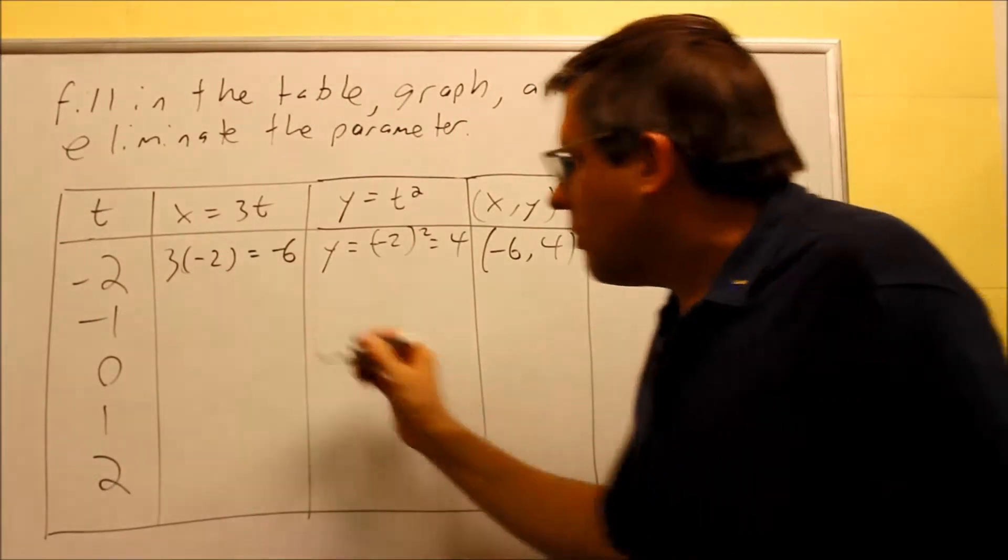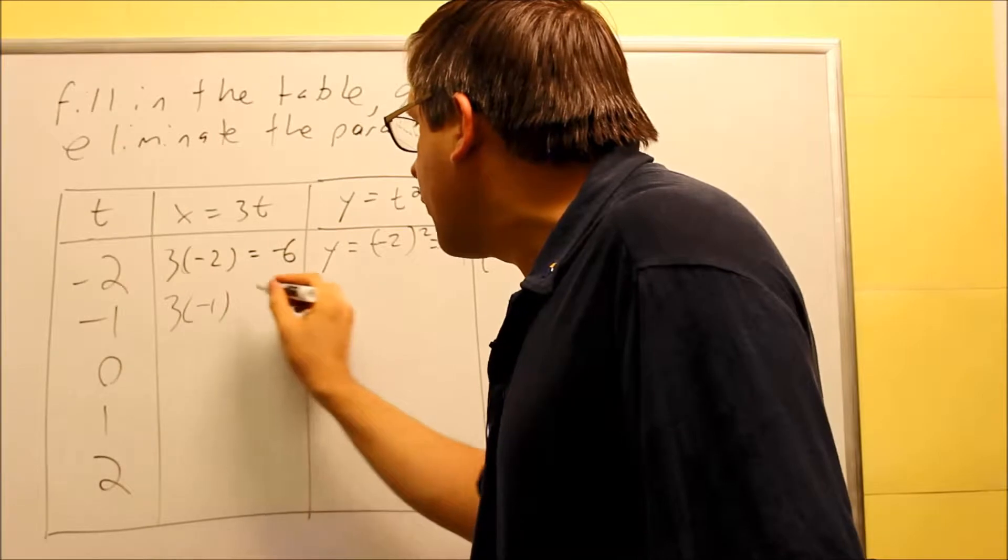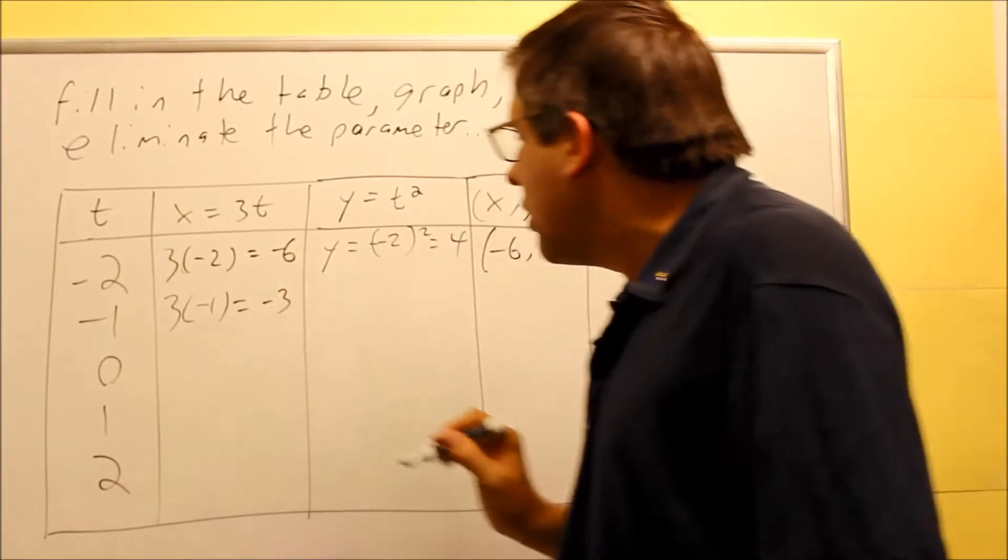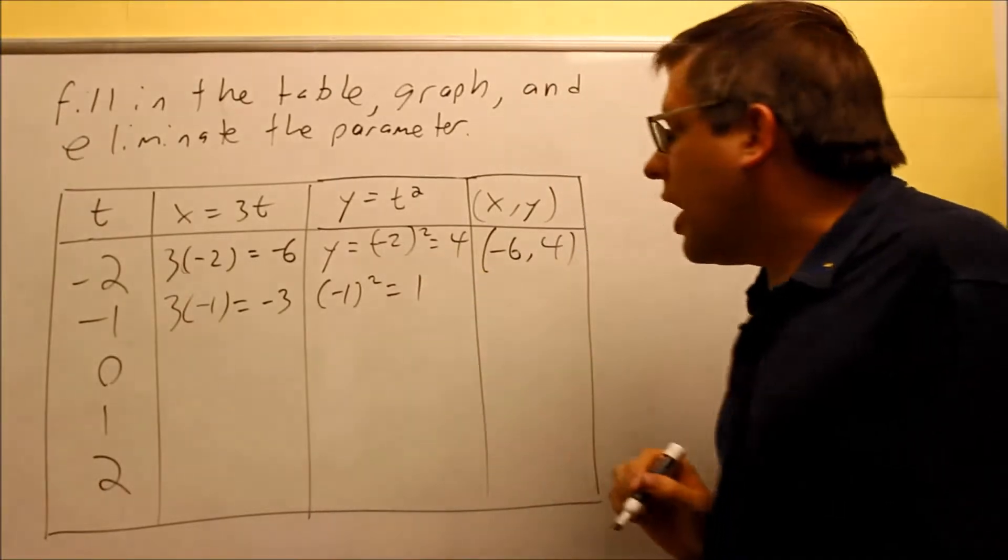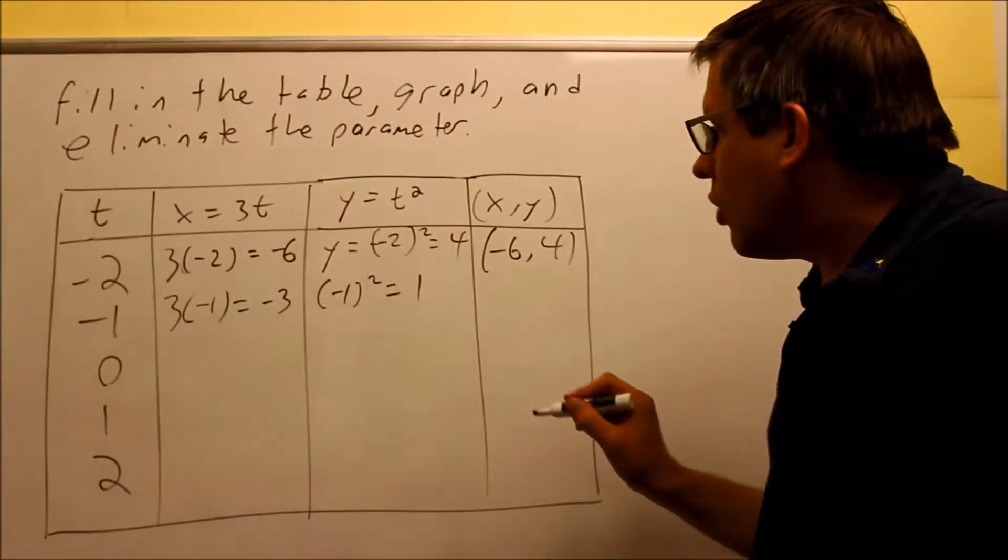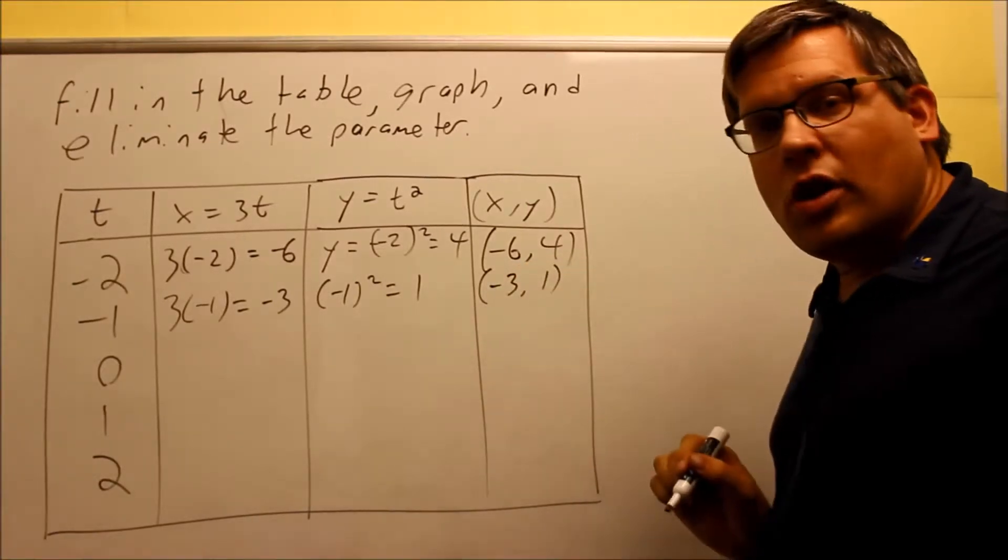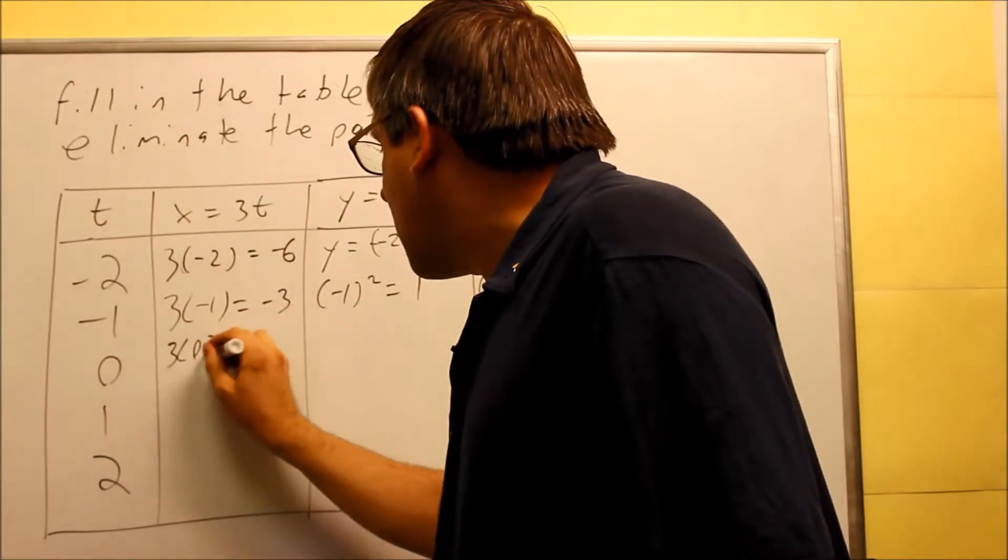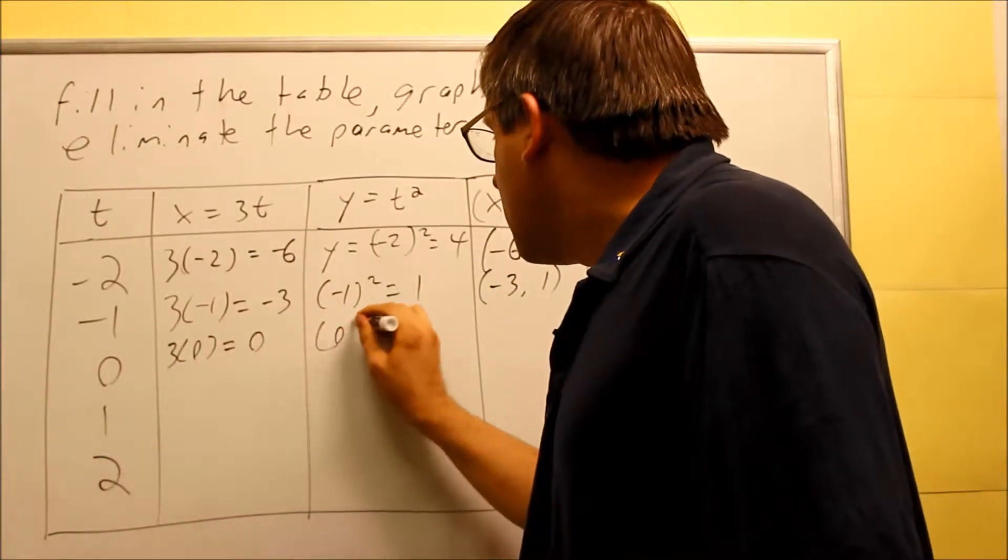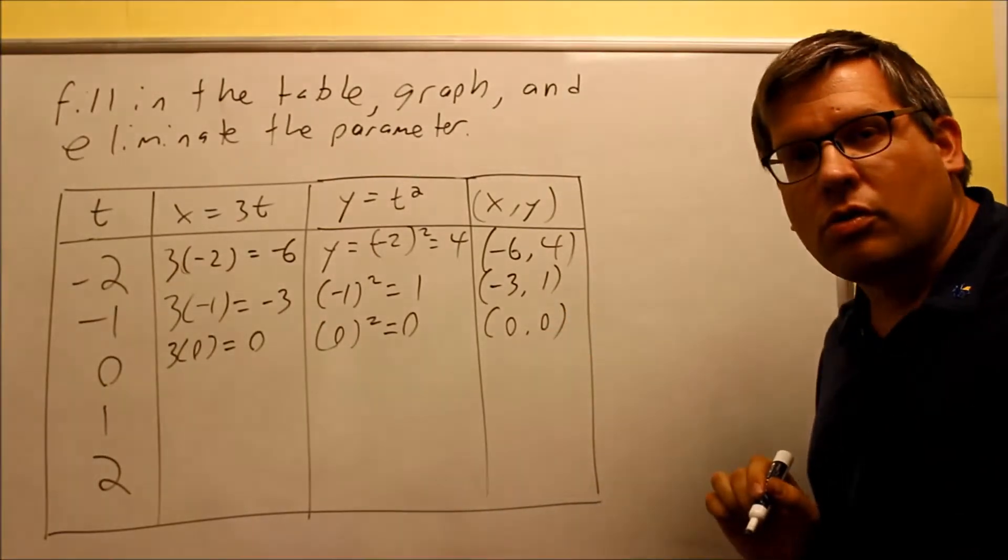Let's do the same thing with negative 1. We put a negative 1 in for t, and you get negative 3 here. We put negative 1 in for t here, and we get 1. When you square the 1, you get positive 1 there. So now we have negative 3 and positive 1, that's our next coordinate. Put in a 0. 3 times 0 is 0. 0 squared is also 0, so it goes through the origin.